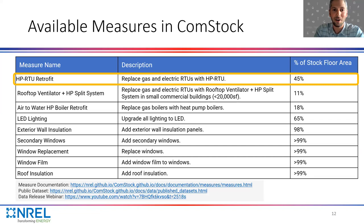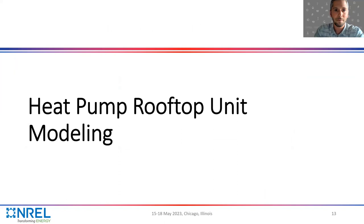Every six months we release a batch of about eight to ten energy efficiency measures with the Comstock tool. Our last batch was at the end of March and our next batch will be in September. Today's presentation is focused on just the heat pump RTU retrofit measure. It's applicable to about 45% of our stock floor area, replacing gas and electric resistance RTUs with heat pump RTUs. We have comprehensive documentation on each of these measures at the link provided.